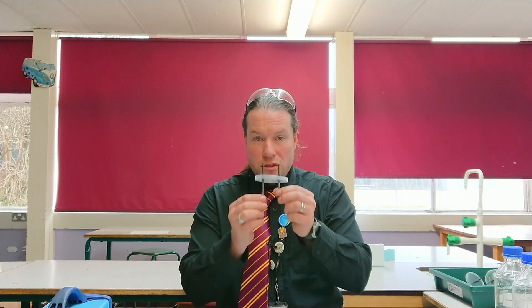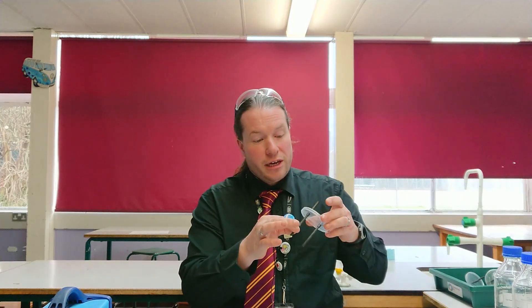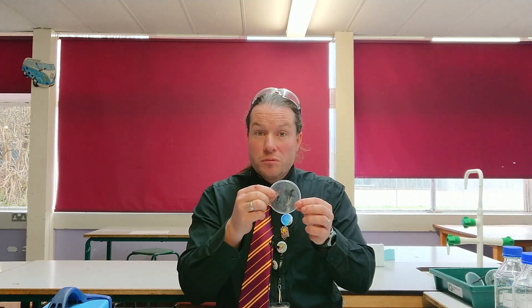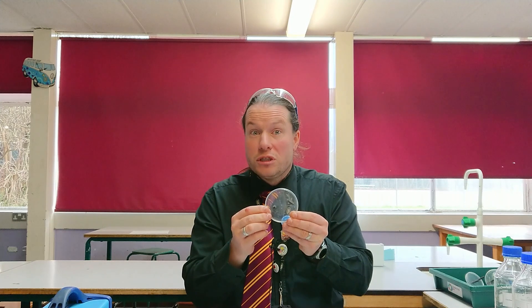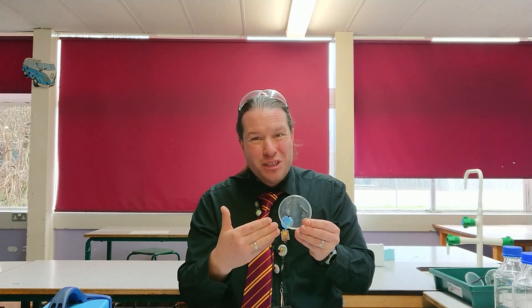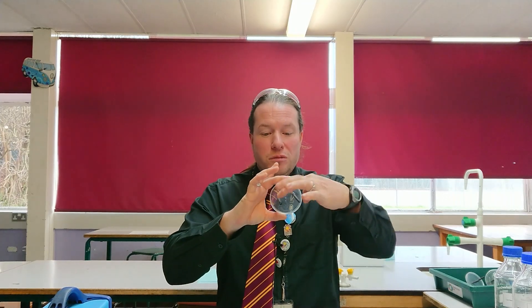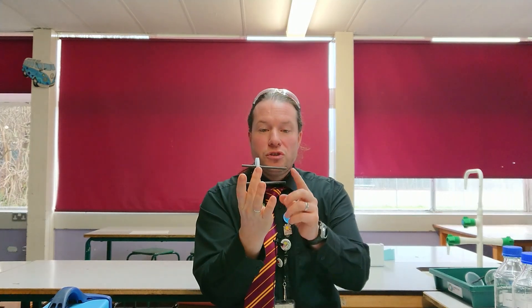We're also going to need two carbon electrodes. We have very cunningly modified a crisp lid - we've used Pringles, many other types of crisps are available, but I had to eat these so I went for ones I liked. We've modified a crisp lid to put the two electrodes through. There are our carbon electrodes.